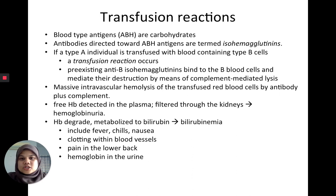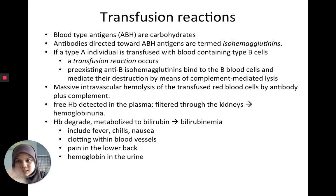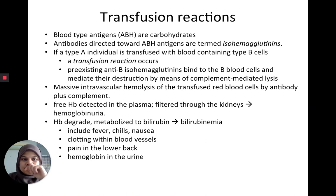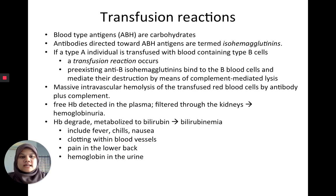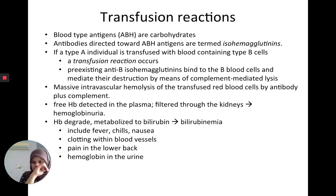Transfusion reactions occur due to incompatibility of blood type antigens — ABH — which are carbohydrates. Antibodies against these antigens are called isohemagglutinins. If a type A person is transfused with type B blood, the anti-B antibodies in the type A individual bind to the B blood cells, which are then destroyed through complement-mediated lysis. This results in massive intravascular hemolysis, with blood cells being filtered through the kidneys so blood appears in the urine, hemoglobin is metabolized causing bilirubinemia, and the patient experiences fever, chills, and nausea.